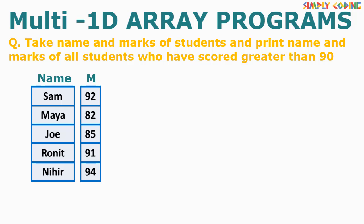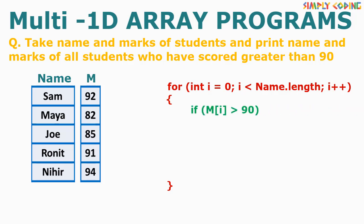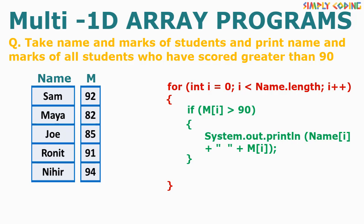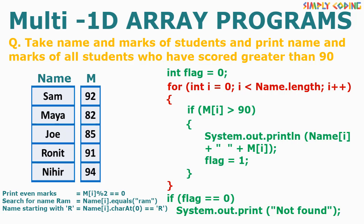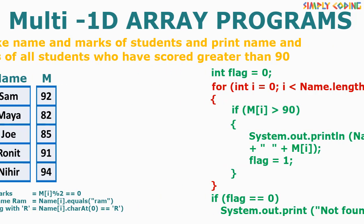For this linear search, we have two input arrays — name and marks. Inside the standard traversal loop, we put an if condition to check if marks are greater than 90. If yes, we print the name and marks at the corresponding index. In search programs, we are often asked to print a message if no record is found; for this we use a flag variable. Once outside the loop, we check the flag and give an appropriate message. Variations include: print all records with even numbers, search for marks of a particular name, or all names starting with a particular character — just change the if condition.